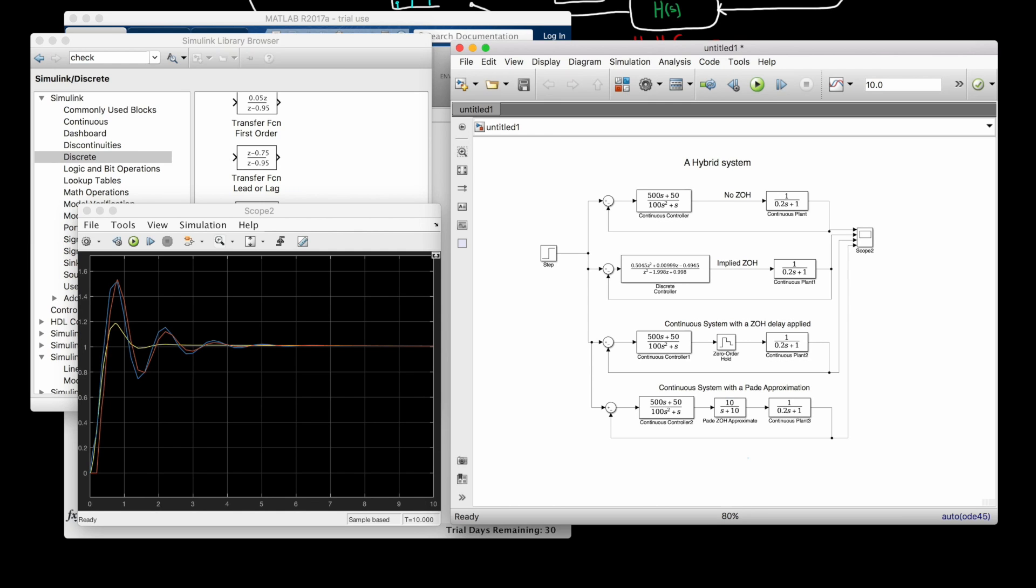This is an expansion of the delay term e^(-sT) and then applied to the S and T domain representations of the zero-order hold. In our case, with a sample time of 0.2 seconds, the Pade approximation for the zero-order hold is 10 over s plus 10. And I'll explain Pade approximations in more detail in the future.